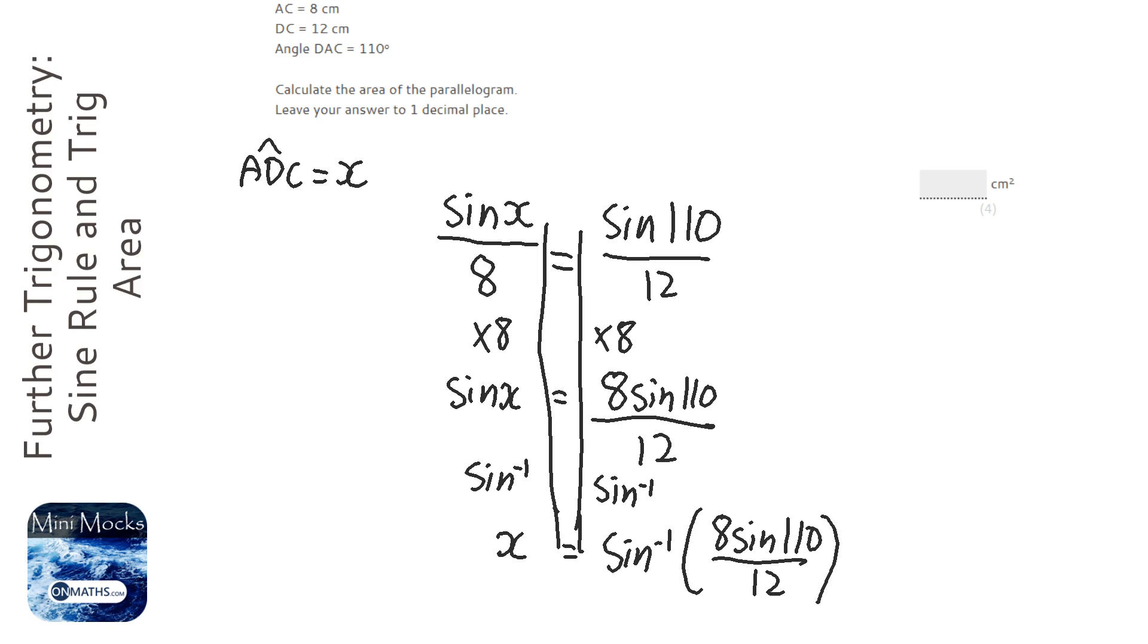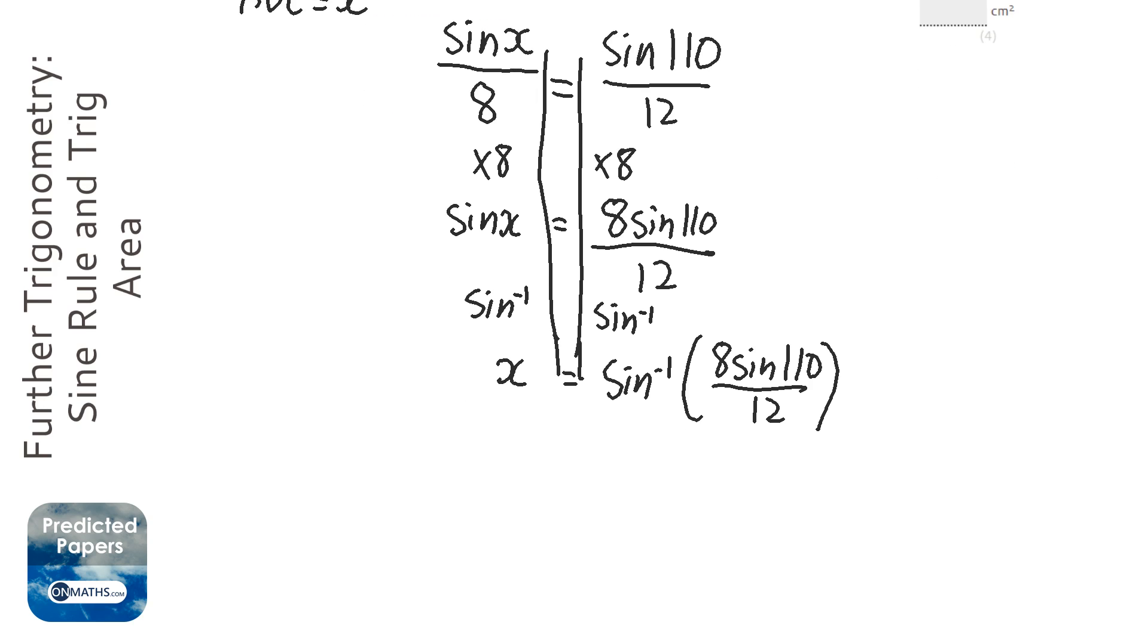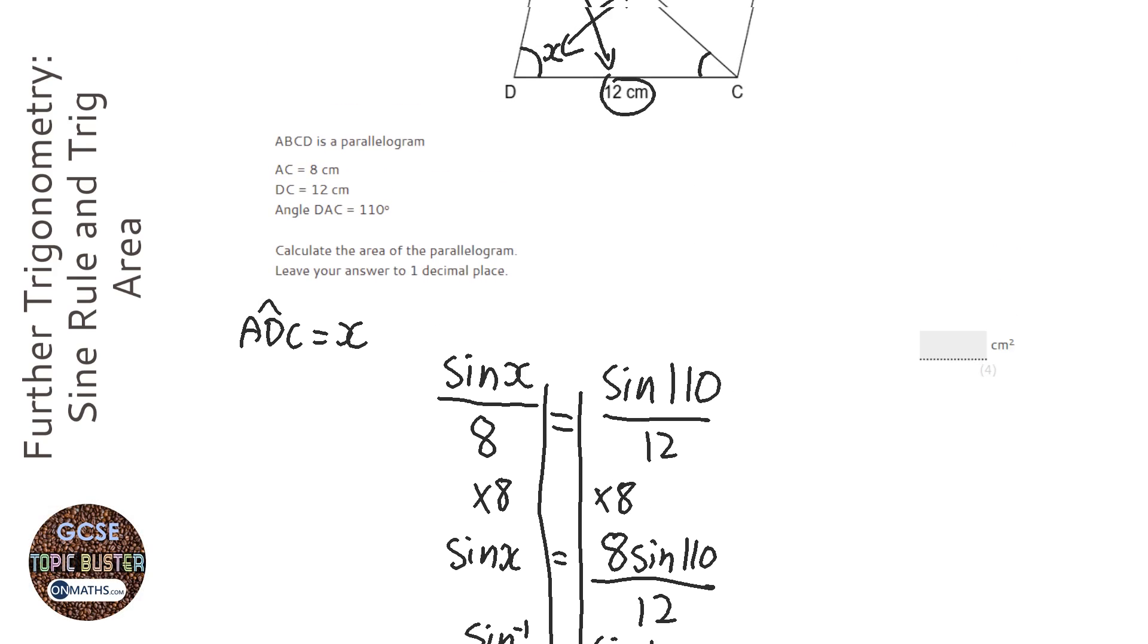Let's get my calculator. So inverse sine, fraction button, 8 sine 110, close the brackets over 12, and then come out of the fraction, close the brackets. So that tells me that X is 38.789 blah blah blah. Now I want to keep the accuracy if I can, so I'm going to keep that in my calculator.